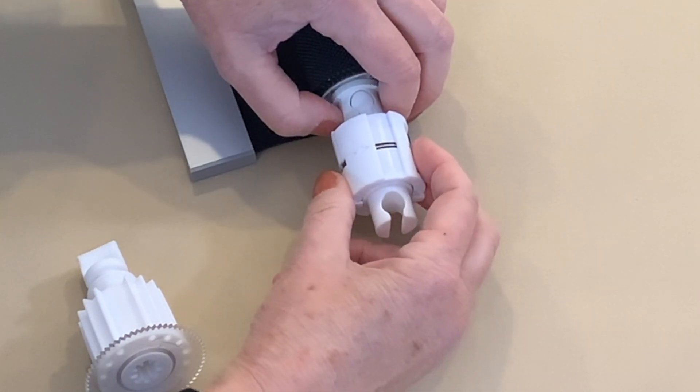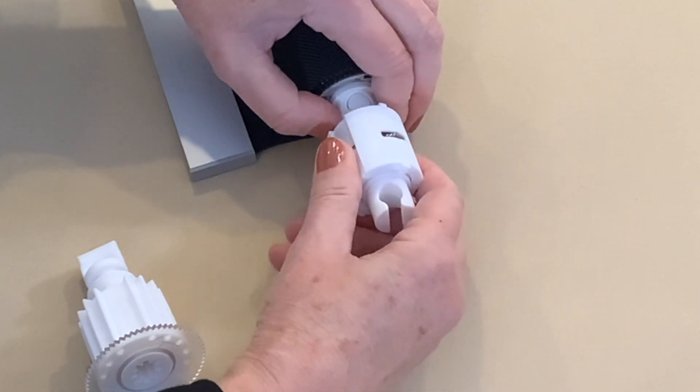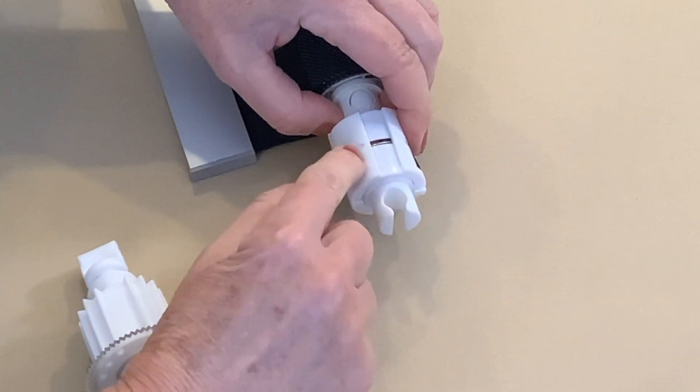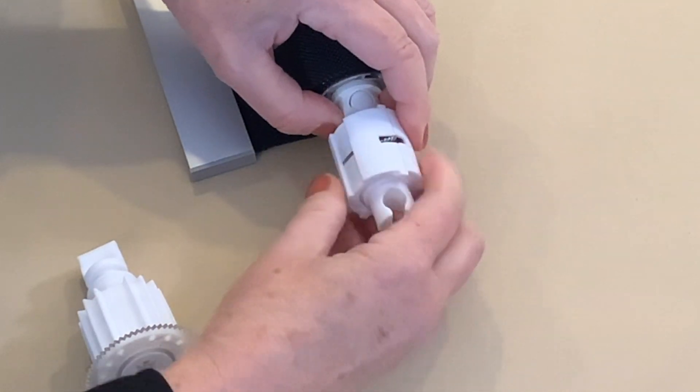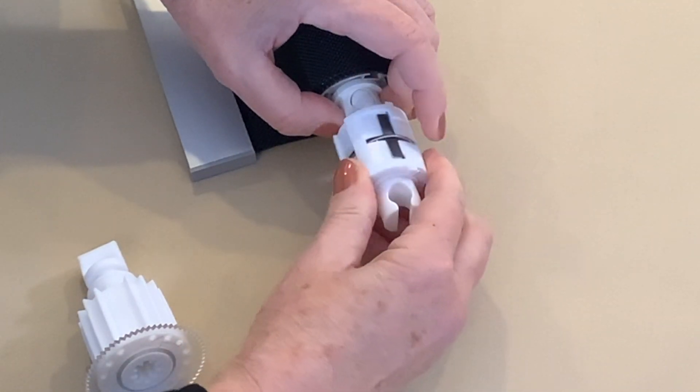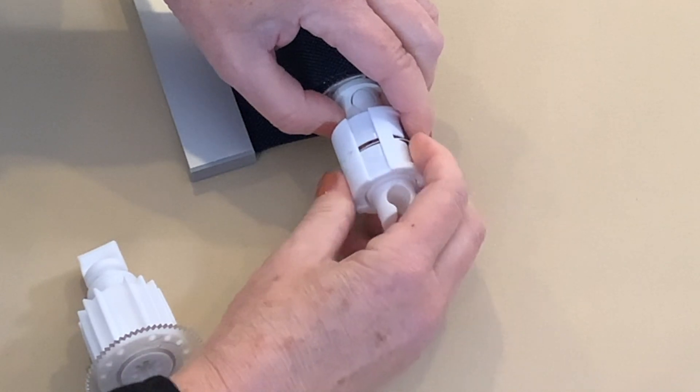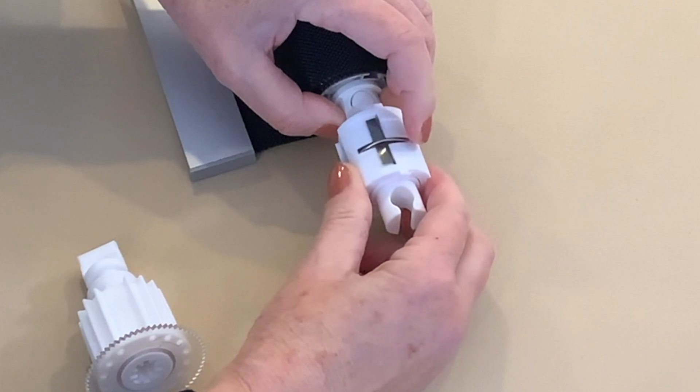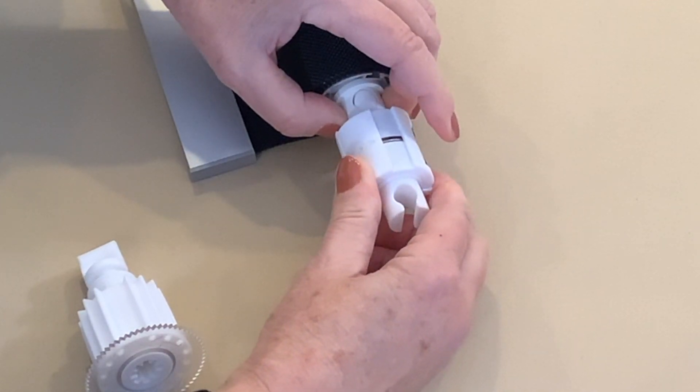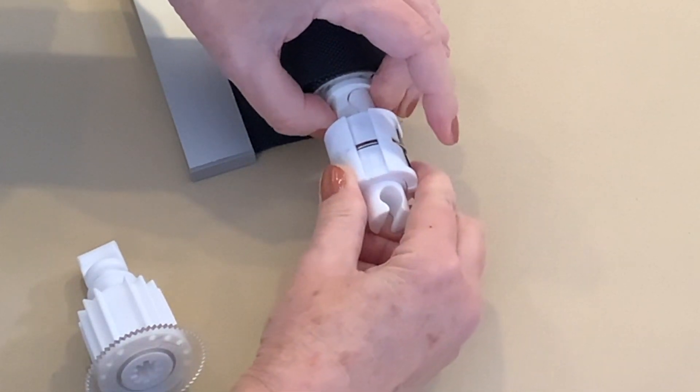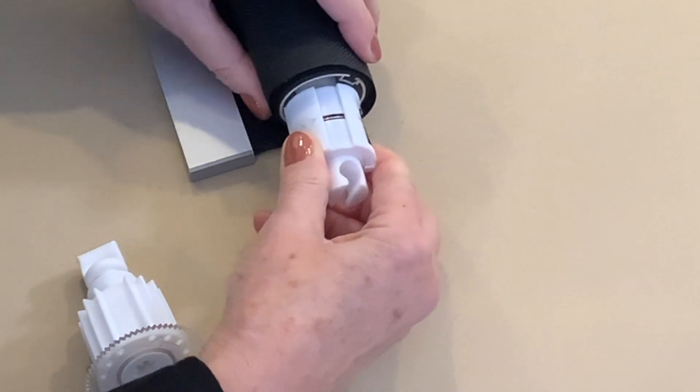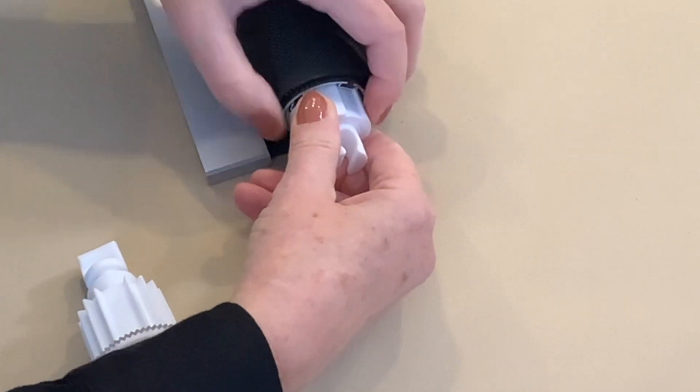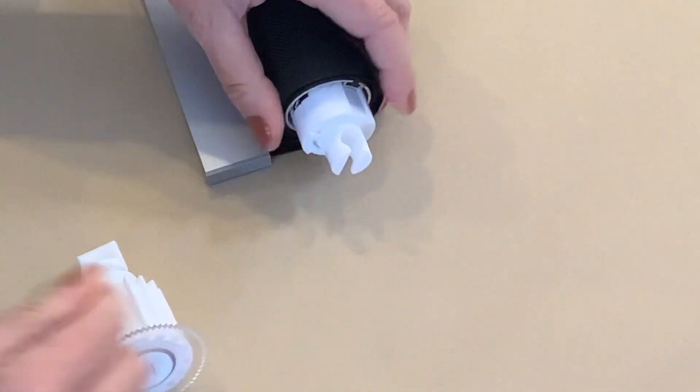So I'm going to turn the spring housing three times. Full turns. That's one. I can tell by that pencil mark I made. And hold onto it. You don't want to let it go. It'll unspring. And then you'll have to replace it. Three. Now that's going to go into the tube over the spline. And that'll hold it in place.